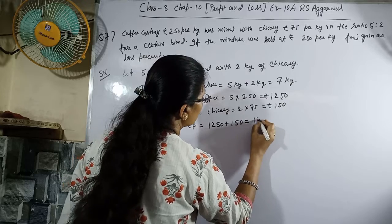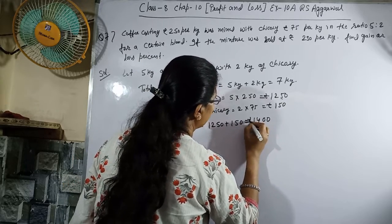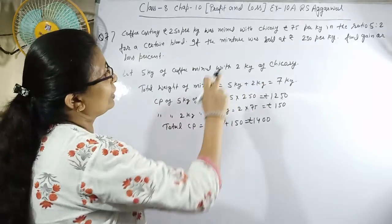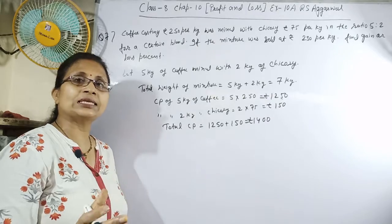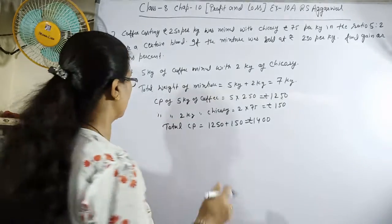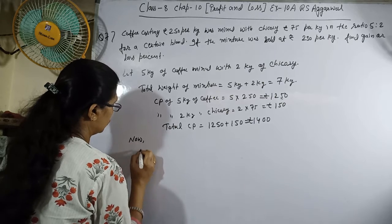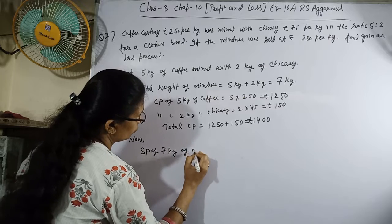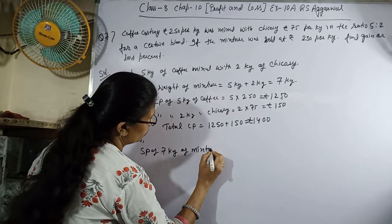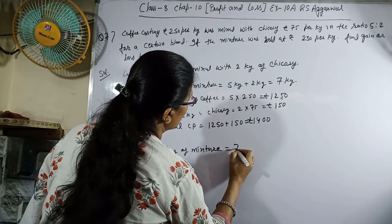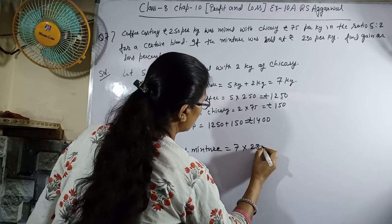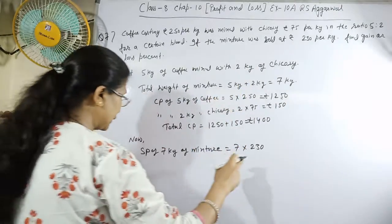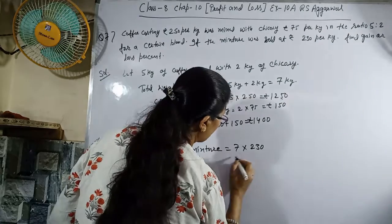Now, selling price of 7 kg mixture at Rs. 230 per kg: 7 × 230